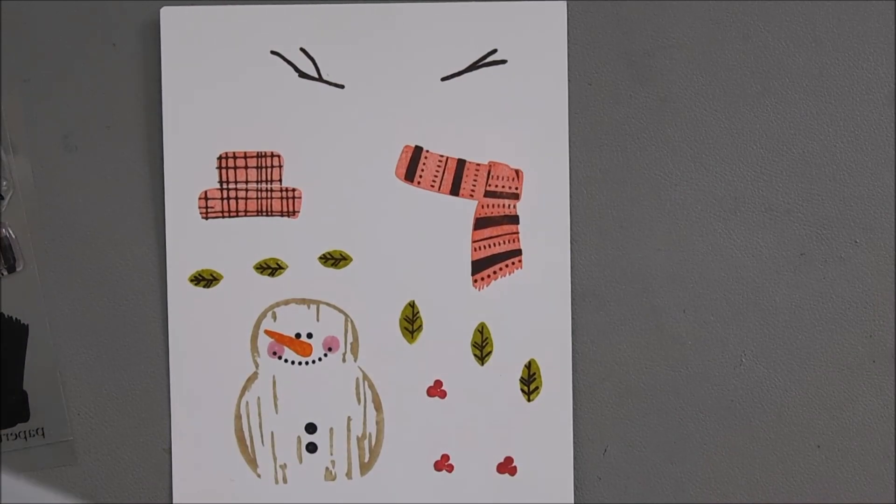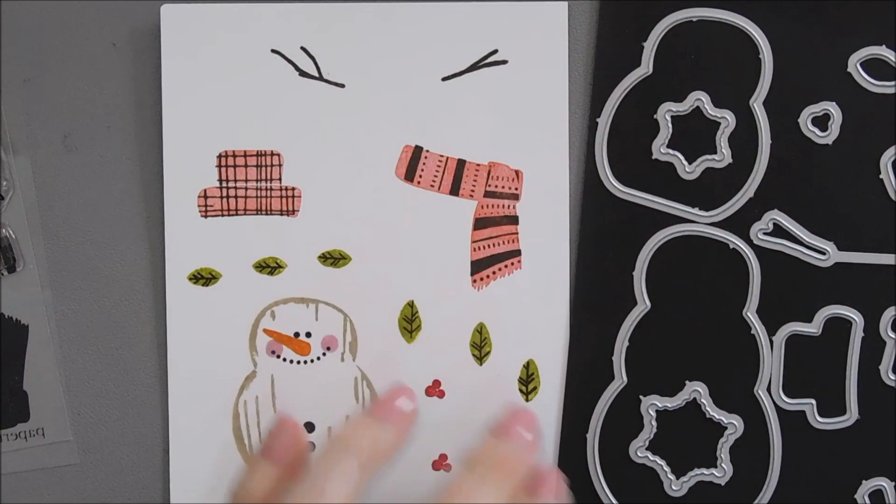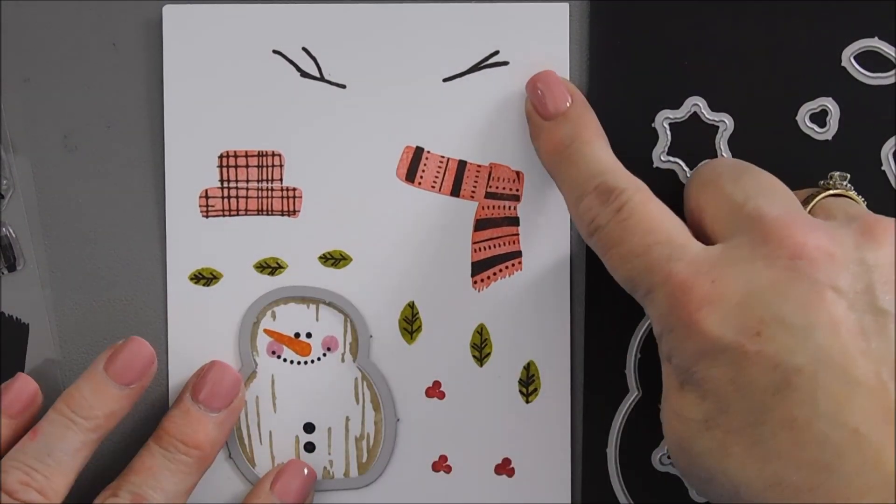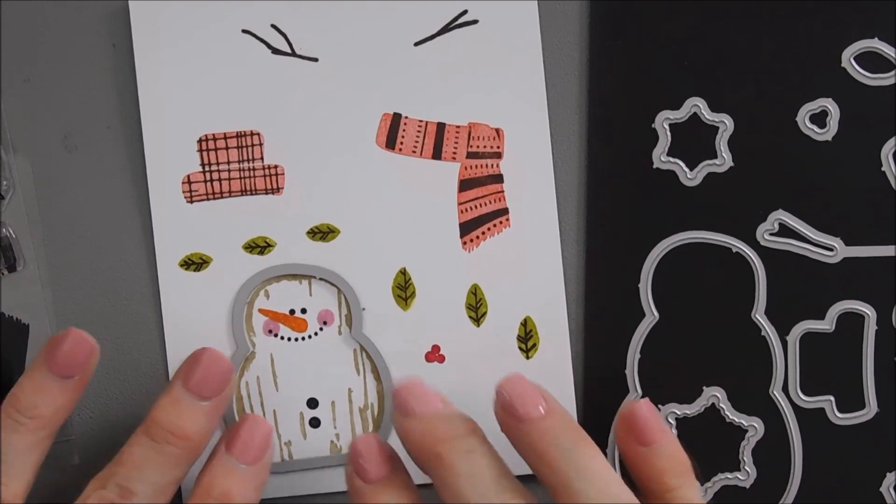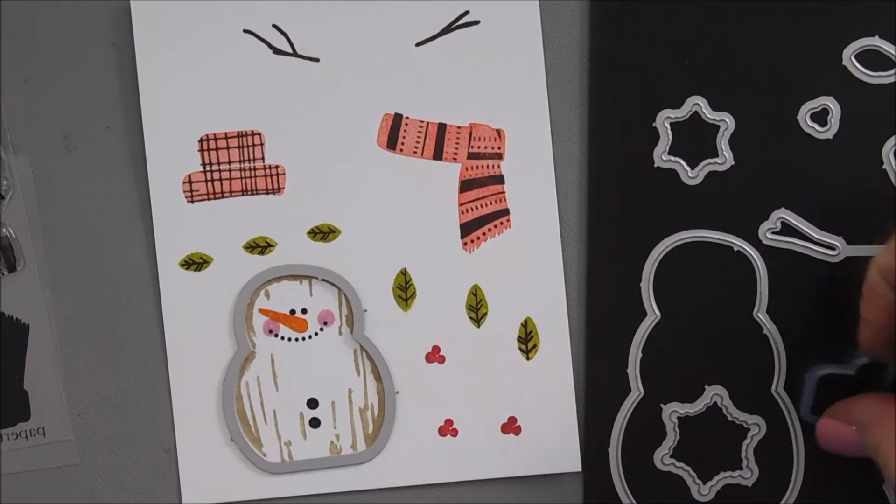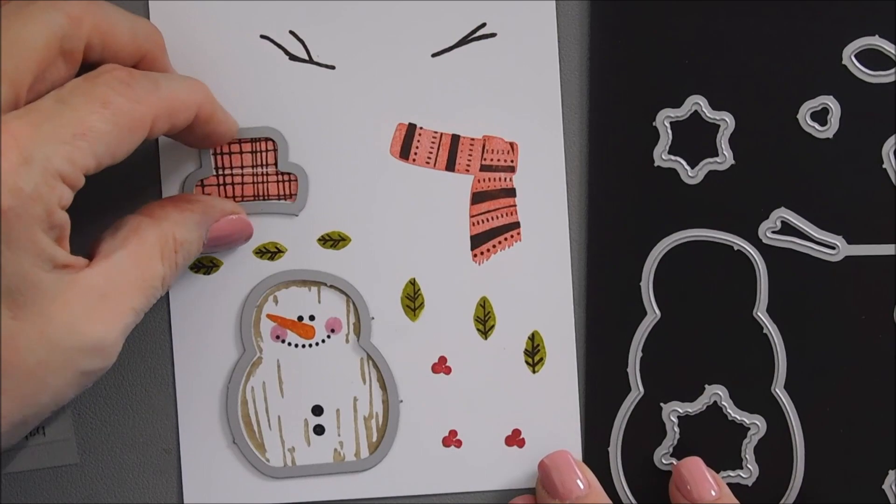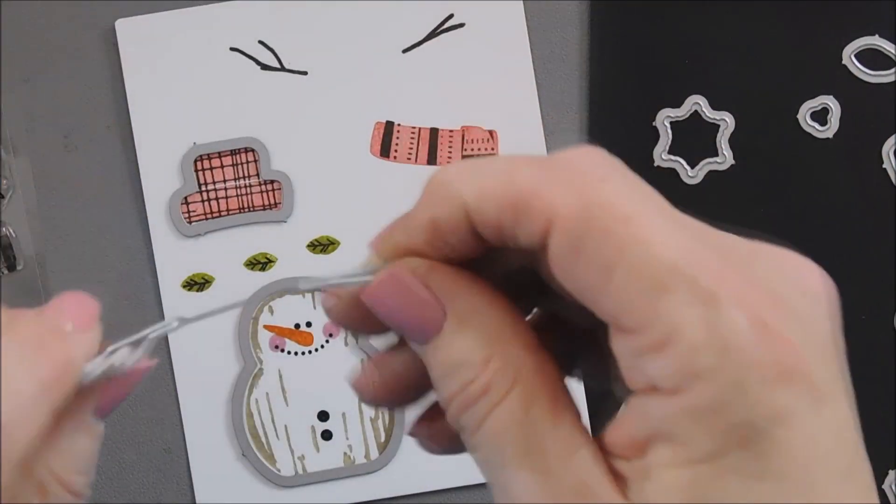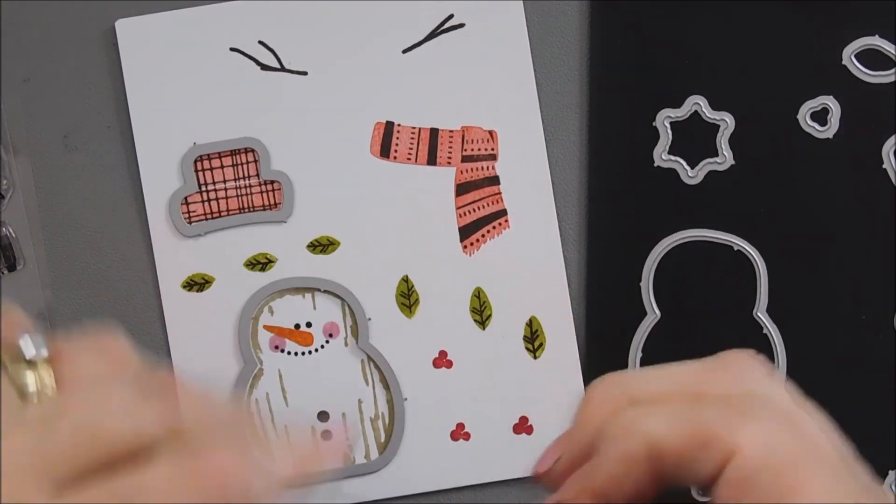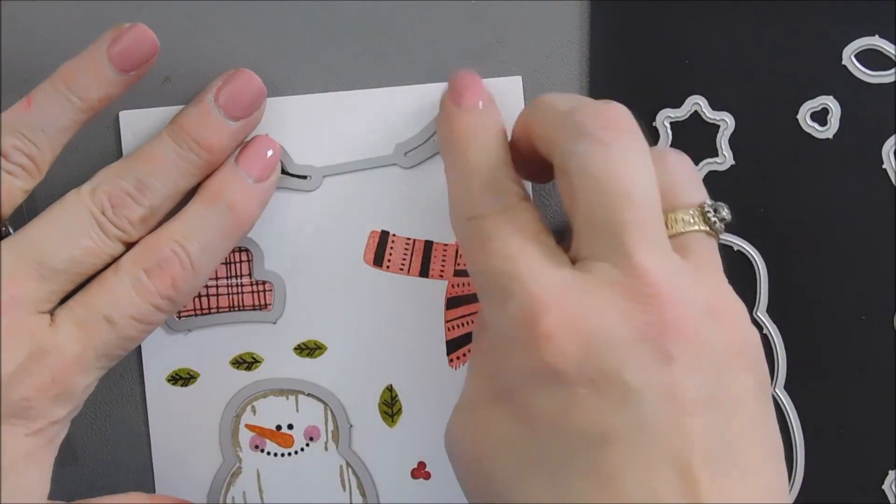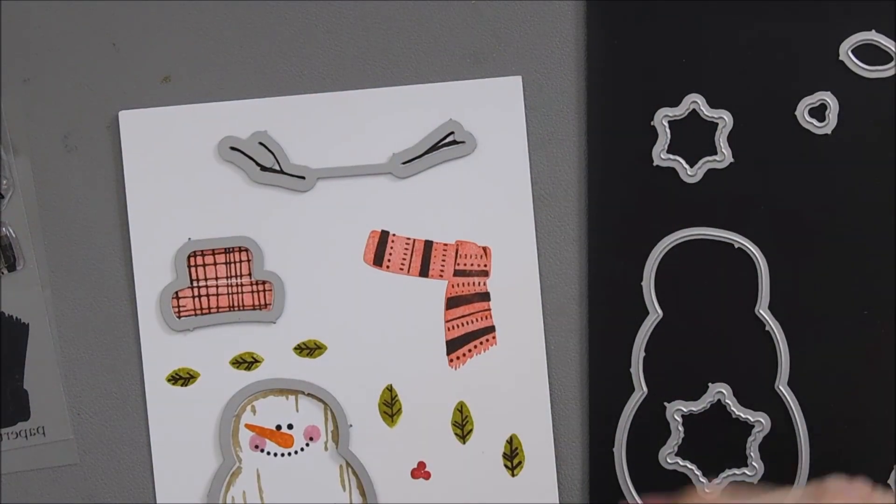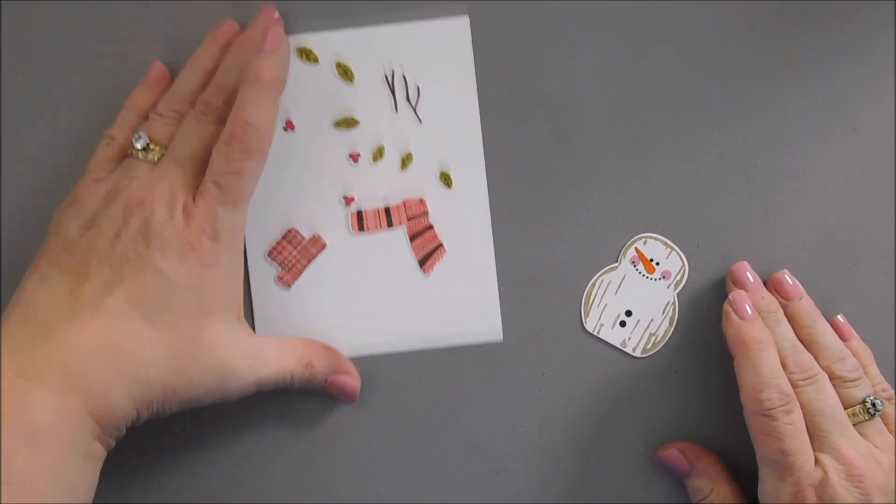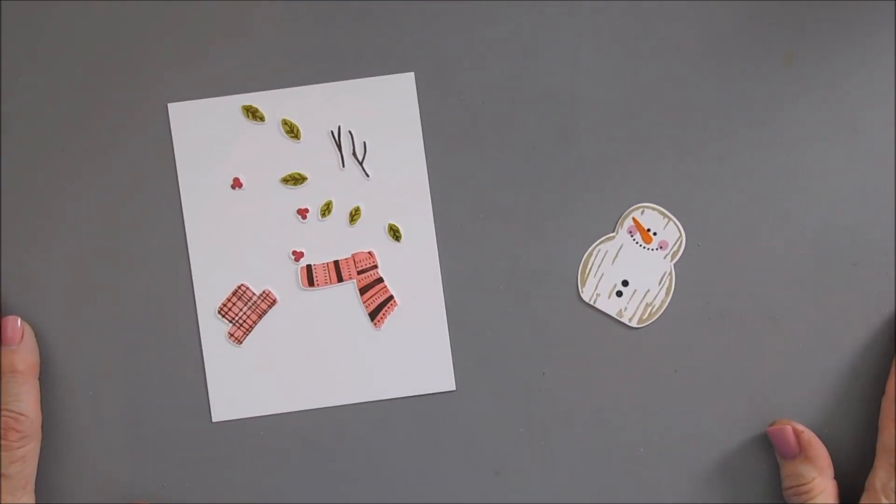Besides our sentiment, that is all the stamping that we're going to do today. I'm going to go ahead and take our coordinating dies and we're going to line them up and die cut out all of our images. I like that the arms of the snowman are not connected to our snowman because this way you can make him playful or make him hold something. It's nice that they space it for you. We have our scarf, and then even the leaves. We have everything die cut.